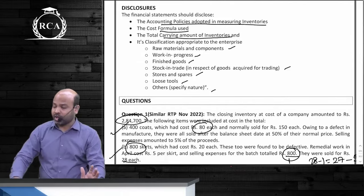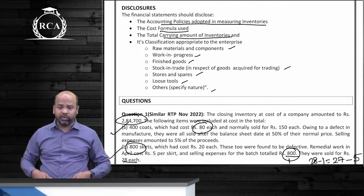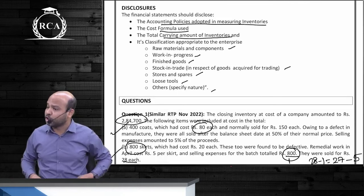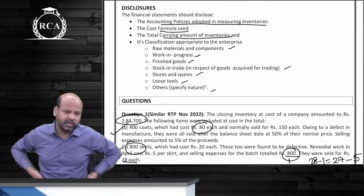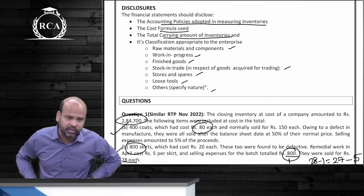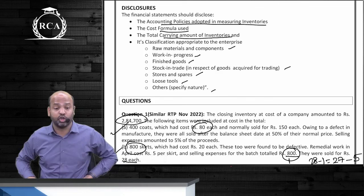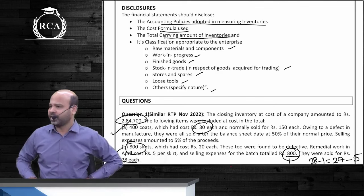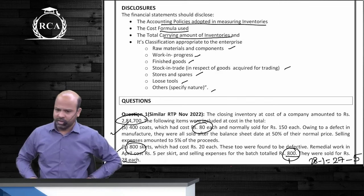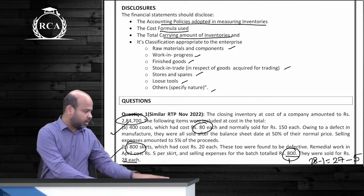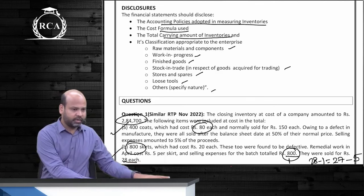The disclosure requirement is simple: disclose the accounting policy being followed, the cost formulae being used, the total carrying amount of inventories, and the classification of inventories into their categories. This is what we have covered under Accounting Standard 2.